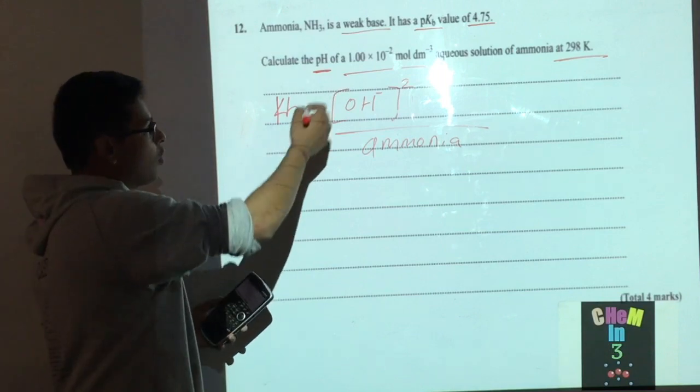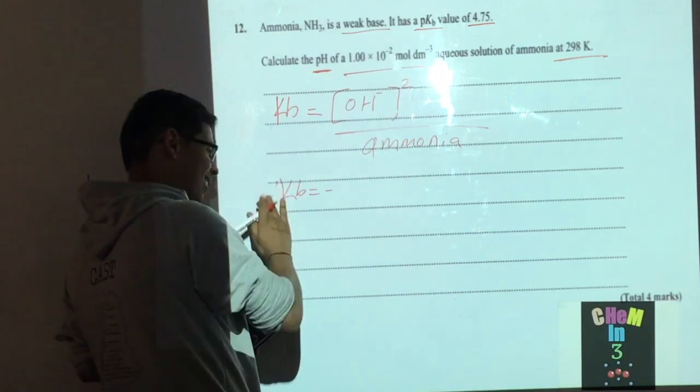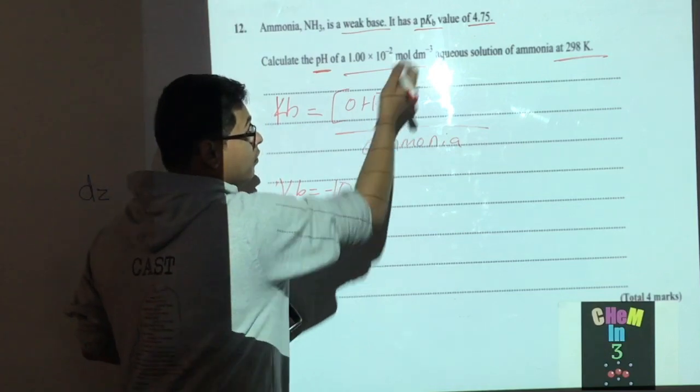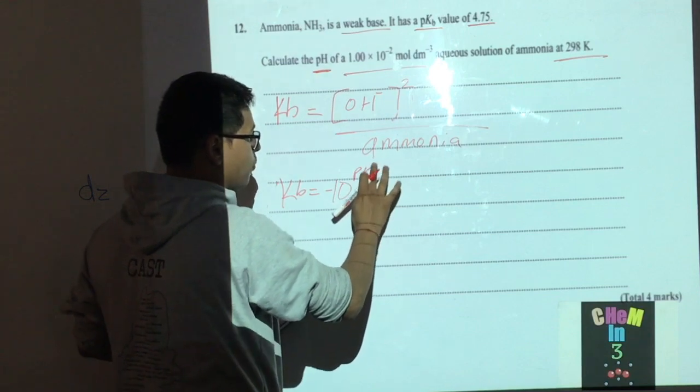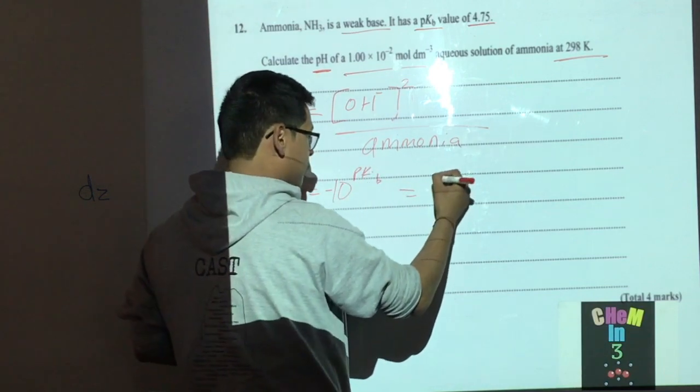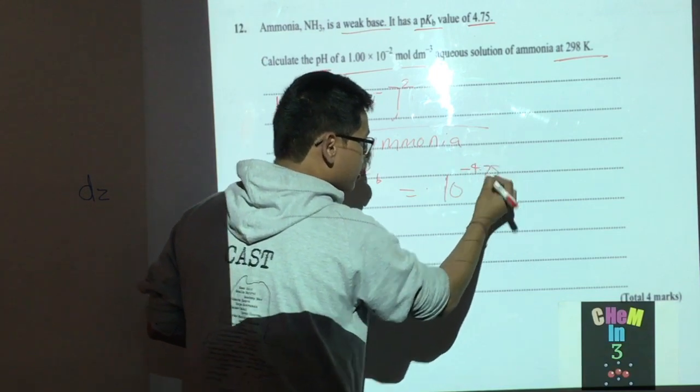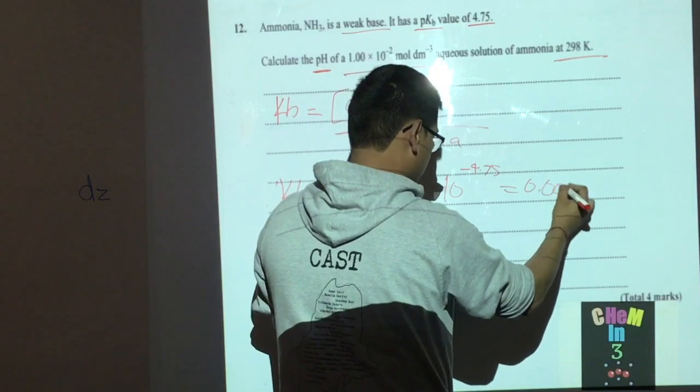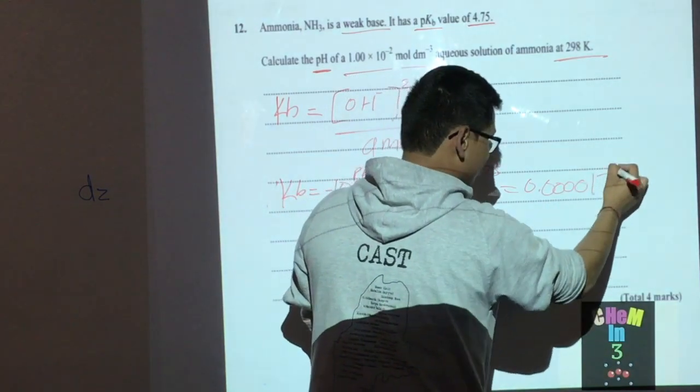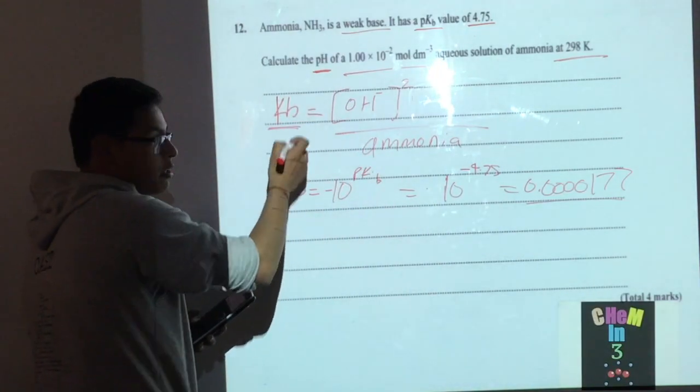From this, we take the pKB value and use the equation 10^(-pKB), which in this case is 10^(-4.75). This comes to roughly 0.0000177, which would be the KB value that we use here.